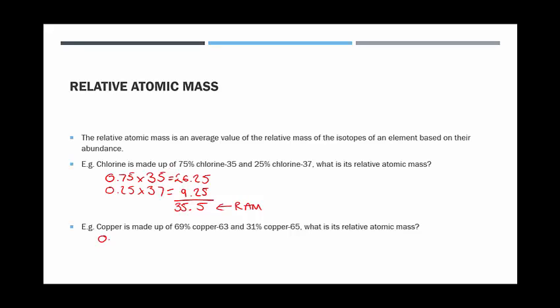So to find this relative atomic mass, we need to do 0.69 times 63, and that gives us 43.47. Then we need to do 0.31 times 65, which gives us 20.15.